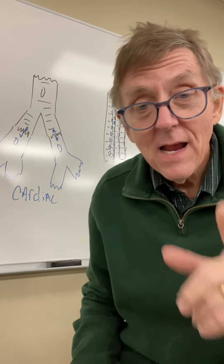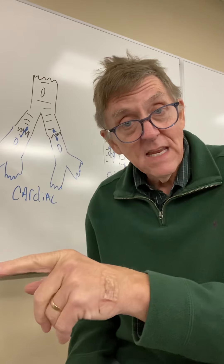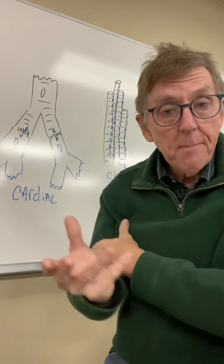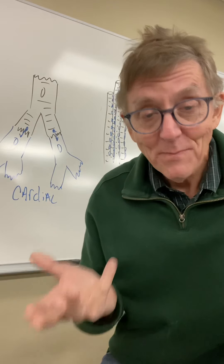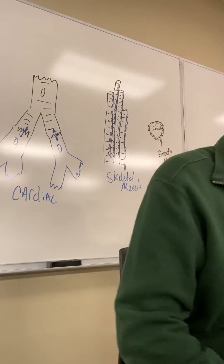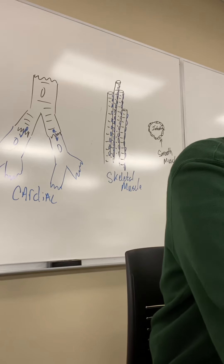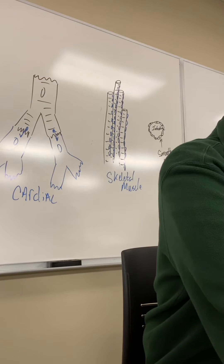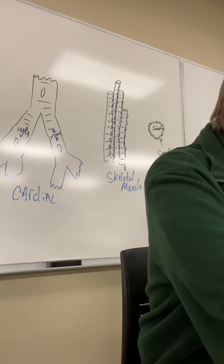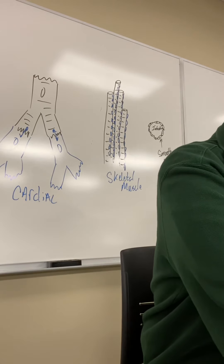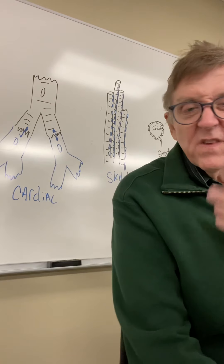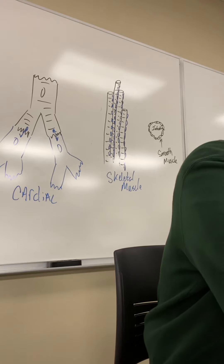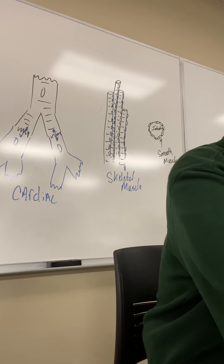When my bicep contracts, my tricep extends. So muscles are contractile and extendable, and they bounce back — they're elastic, returning to their original shape. We also talked about the different layers of connective tissue that extend through muscles, including the aponeurosis.